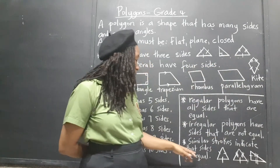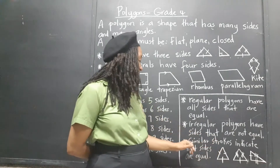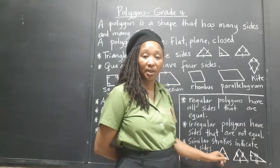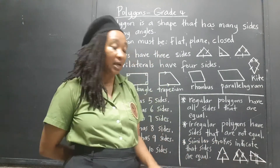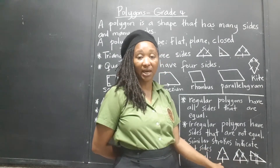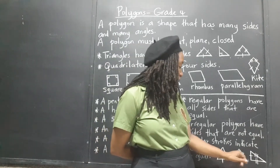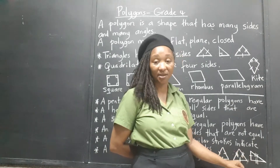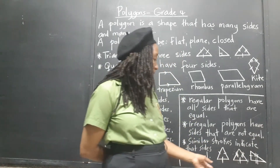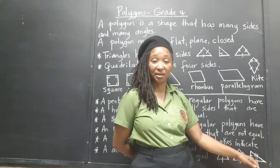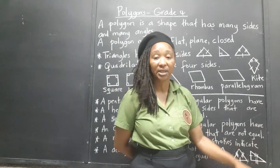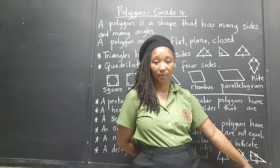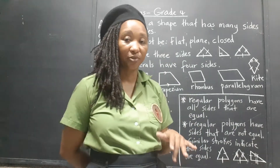You'll notice strokes on the sides of shapes — similar strokes indicate those sides are equal to each other. For example, where all sides have one stroke, all those sides are equal. An equilateral triangle has three equal sides. In an isosceles triangle, two sides have two strokes indicating they are equal, and one side has one stroke — different from the other two. A scalene triangle has all three sides of different lengths, shown by one stroke, two strokes, and three strokes.